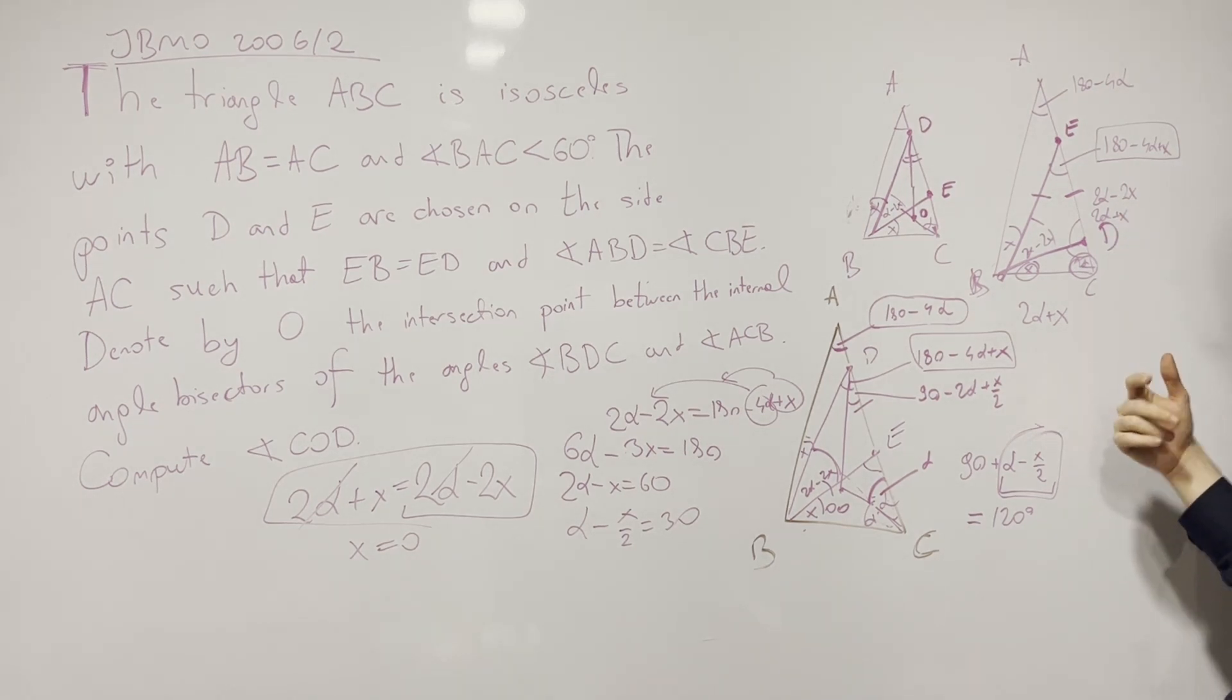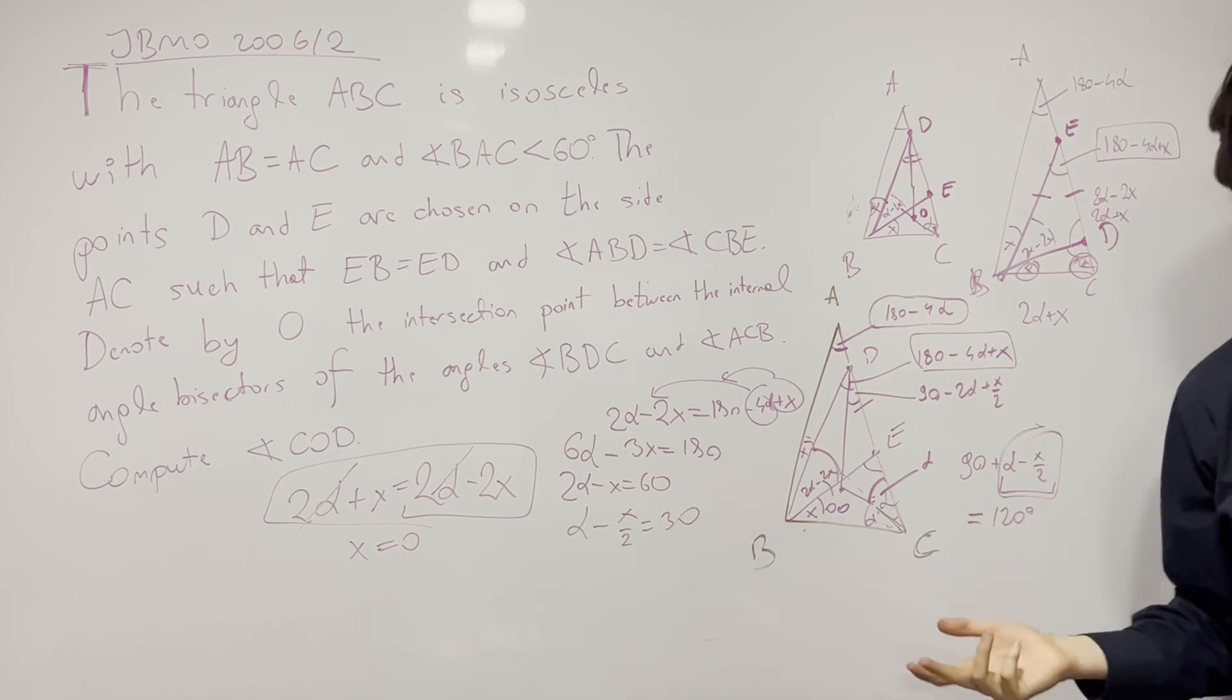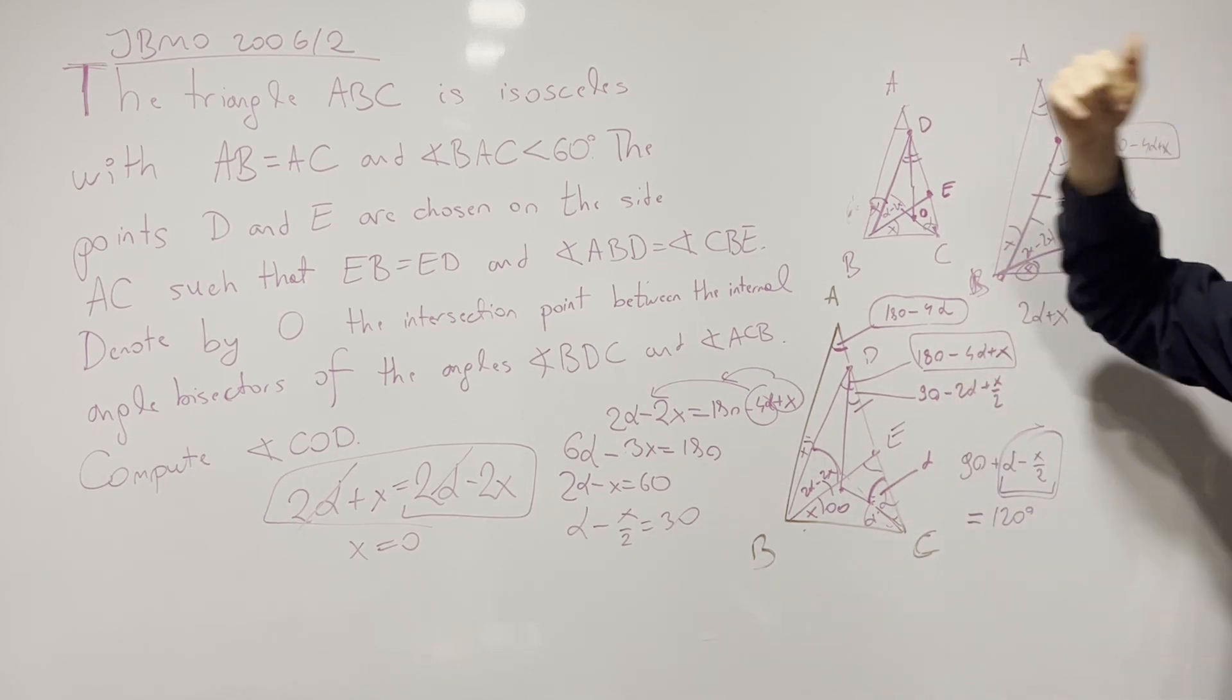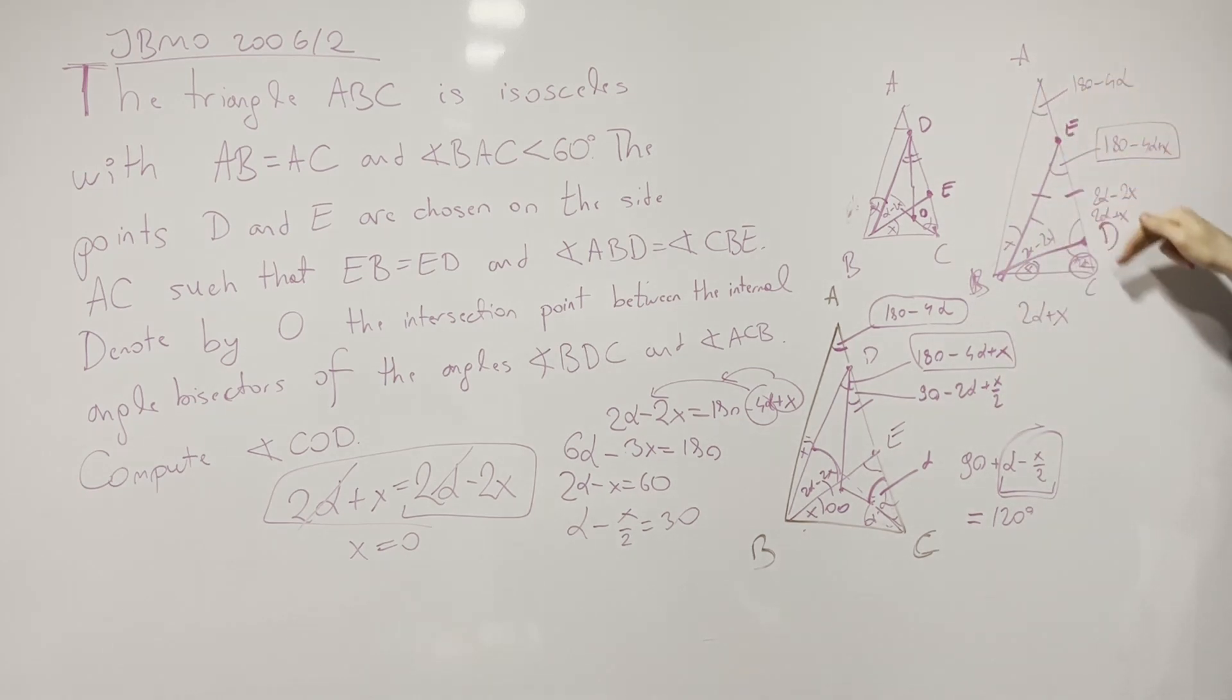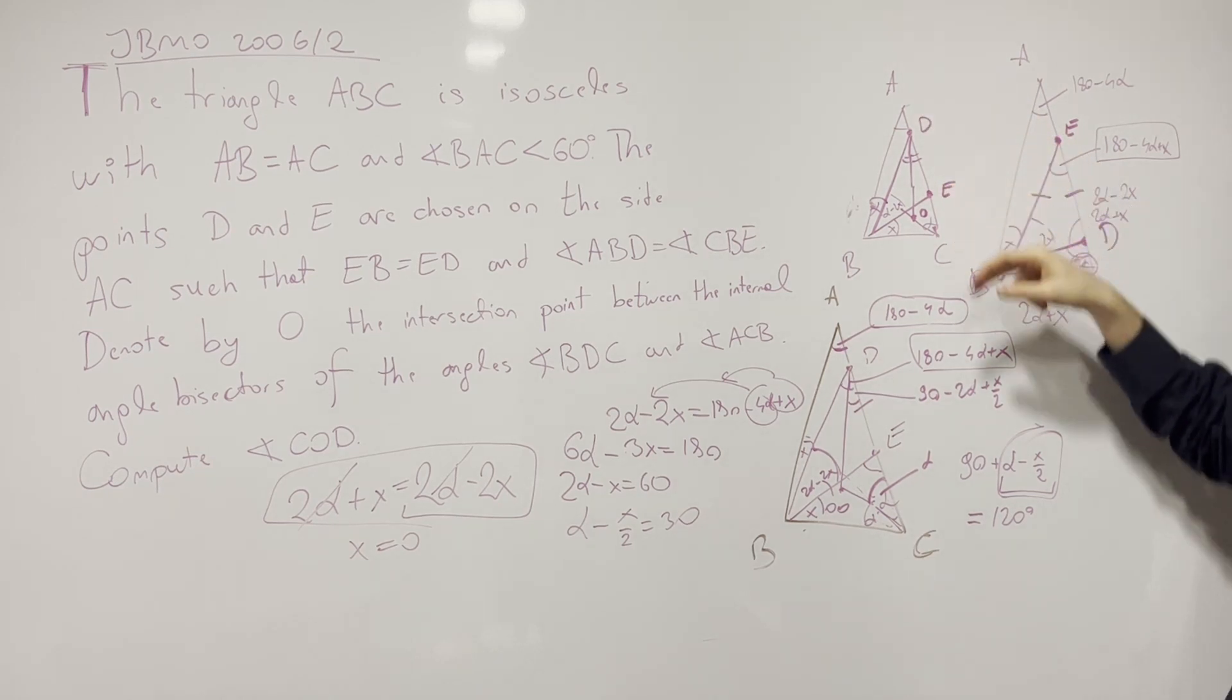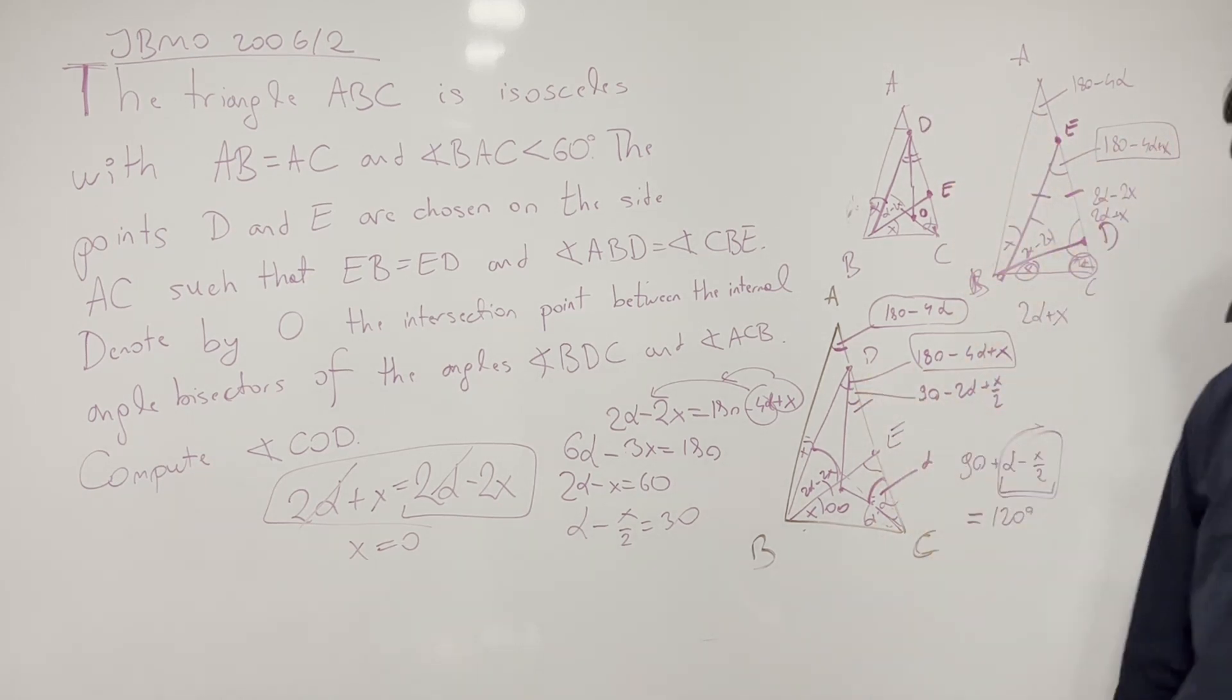And you could make the argument that that makes the angle 0, but I think the correct argument here that was made was that this means this is impossible. It's impossible for the ordering of the points to be A, E, D, C on the segment AC. But rather, it has to be A, D, E, C. Now, this finishes up our problem.